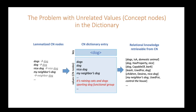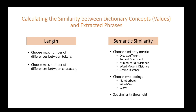The problem with our dictionary is that we obtain many concept nodes that contain not only the key lemma but other content words. These nodes might be unrelated nodes that we want to omit. We therefore establish a method that allows us to filter out nodes that are not similar enough to the candidate phrases, by calculating the similarity between the concepts in our ConceptNet dictionary and the extracted candidate phrase. We calculate similarity in terms of length and semantic similarity, offering options such as the maximum number of token differences or various metrics like dice coefficient, word-mover's distance, or cosine distance.